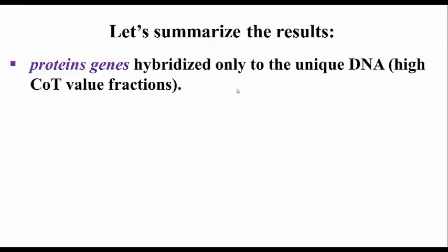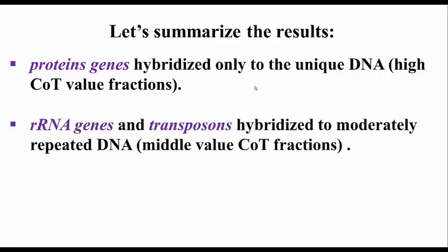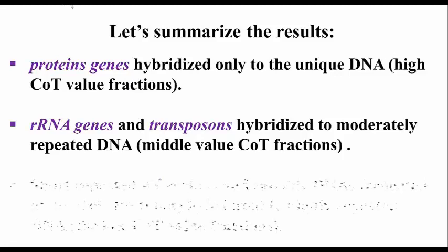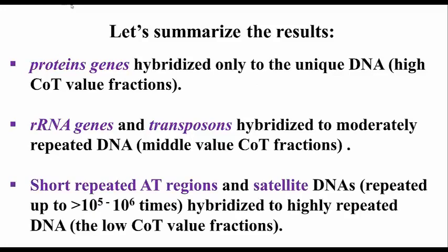Genes for proteins turn out to hybridize only to the unique DNA that takes a long time to anneal, found in the high COT value fractions. Ribosomal RNA genes, and also transposons, can be shown to hybridize to moderately repeated DNA, the middle COT value fractions. Short, repeated AT-rich regions — that's adenosine and thymine rich regions — and satellite DNAs, which can be repeated up to 100,000 to a million times, hybridize to the low COT value fraction, that is to say, to the highly repeated DNA fraction.